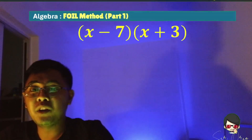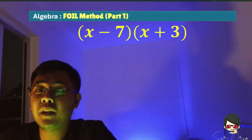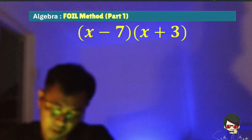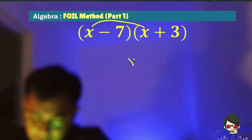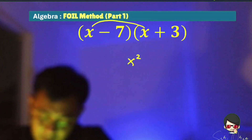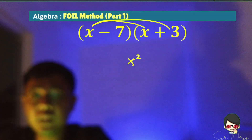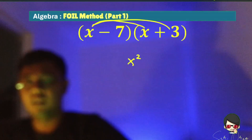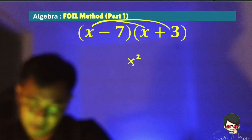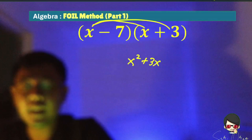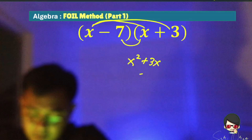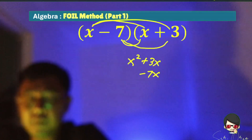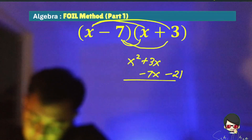Next, using the FOIL method: what is the product of x minus 7 times x plus 3? Applying the FOIL method — first term times first term, x times x, that is x squared. Then x times 3, the outer terms, we have positive 3x. The inner terms: negative 7 times x, that is negative 7x. And the last term: negative 7 times positive 3, that is negative 21.